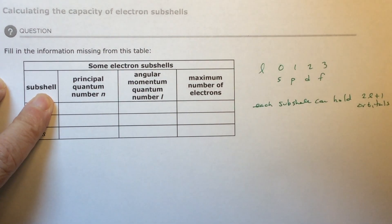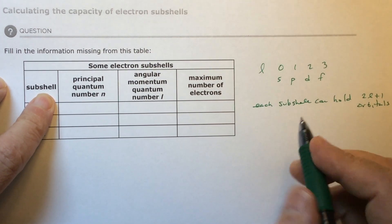And each orbital can hold two. So let's see what the S is.